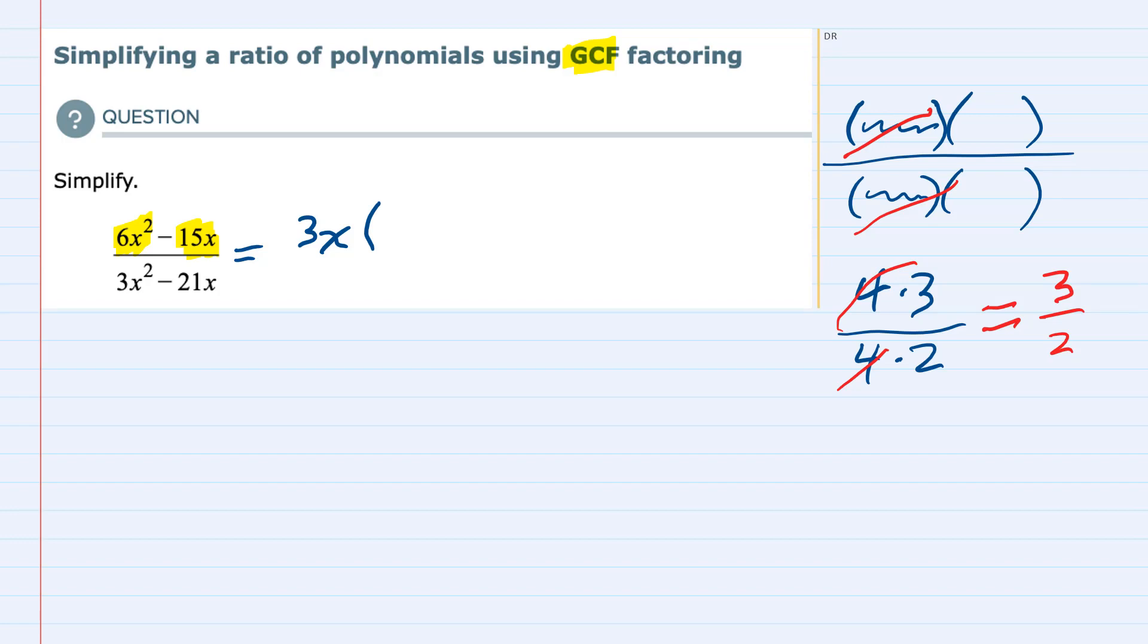Well, from the first term 6x squared, in order for this to distribute and get back to 6x squared, I would divide the 6x squared by 3x and I would see that I would have a 2 left. 6 divided by 3 is 2, and then one of these x's would cancel and I would be left with an x. So again to check this, 3x times 2x would give me the 6x squared.